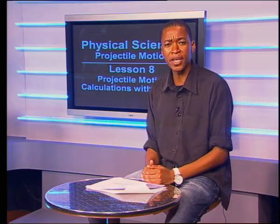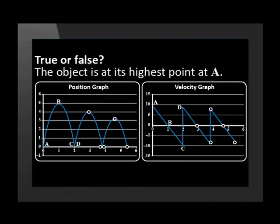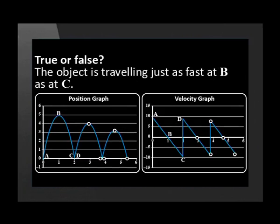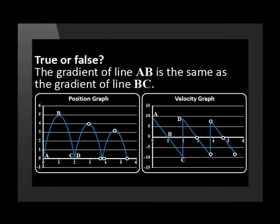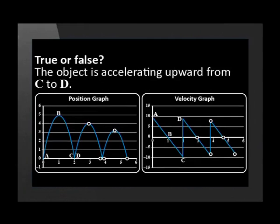Now it should be easy to answer the next true or false questions. True or false: the object is at its highest point at A. The object is at its highest point at B. The object is traveling just as fast at A as at C. The gradient of line AB is the same as the gradient of line BC. The object is in free fall from C to D. The object is accelerating upward from C to D.